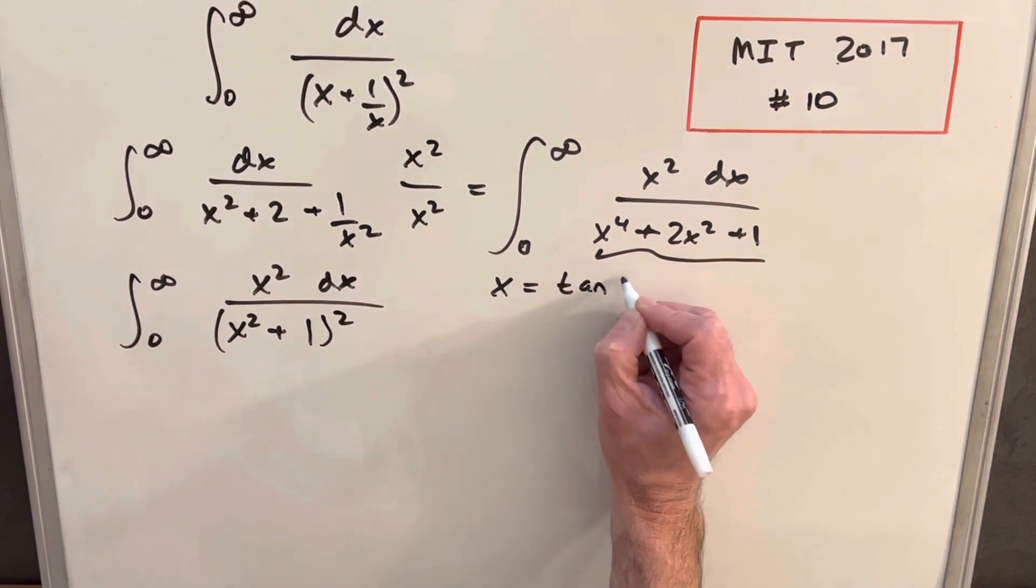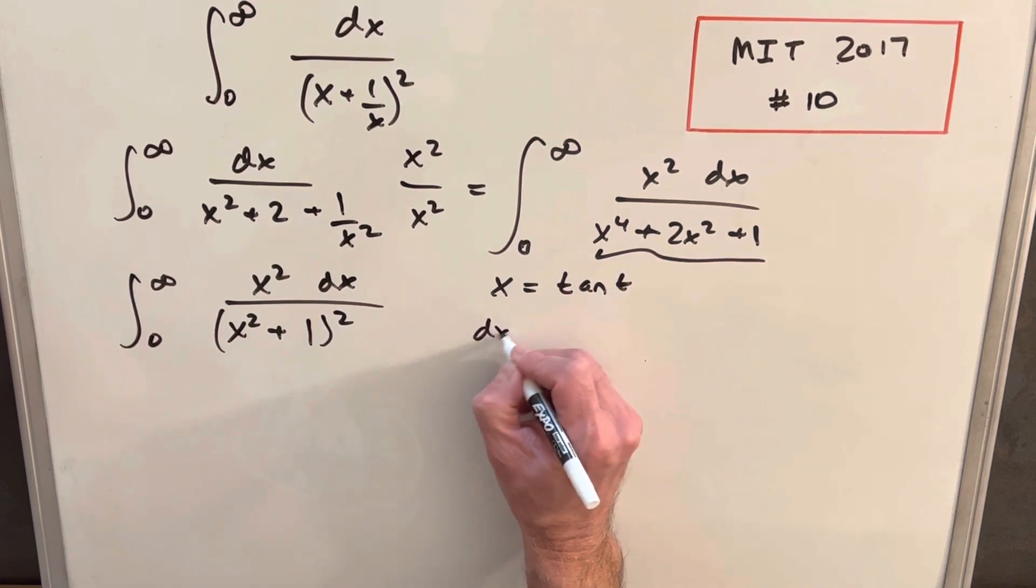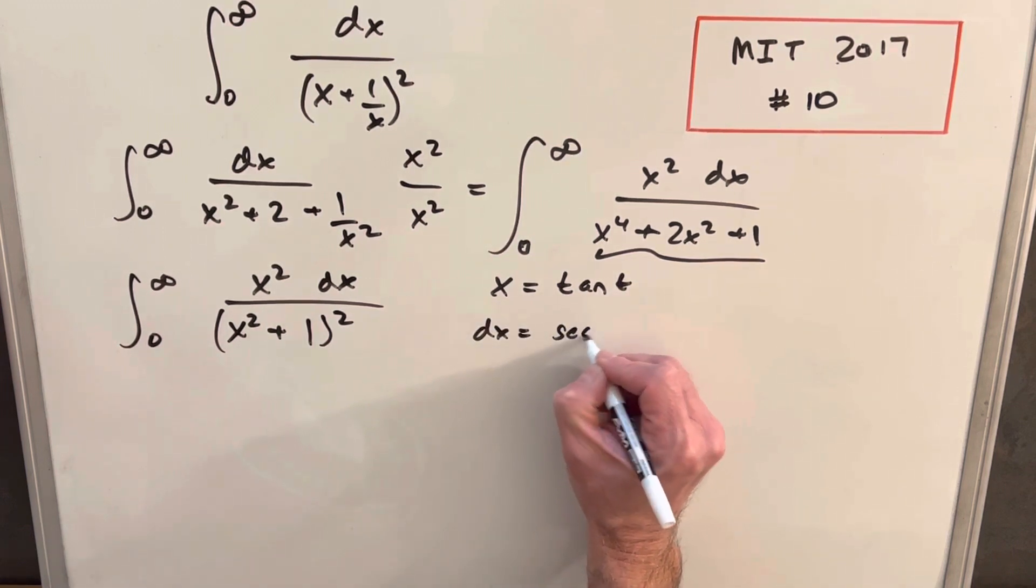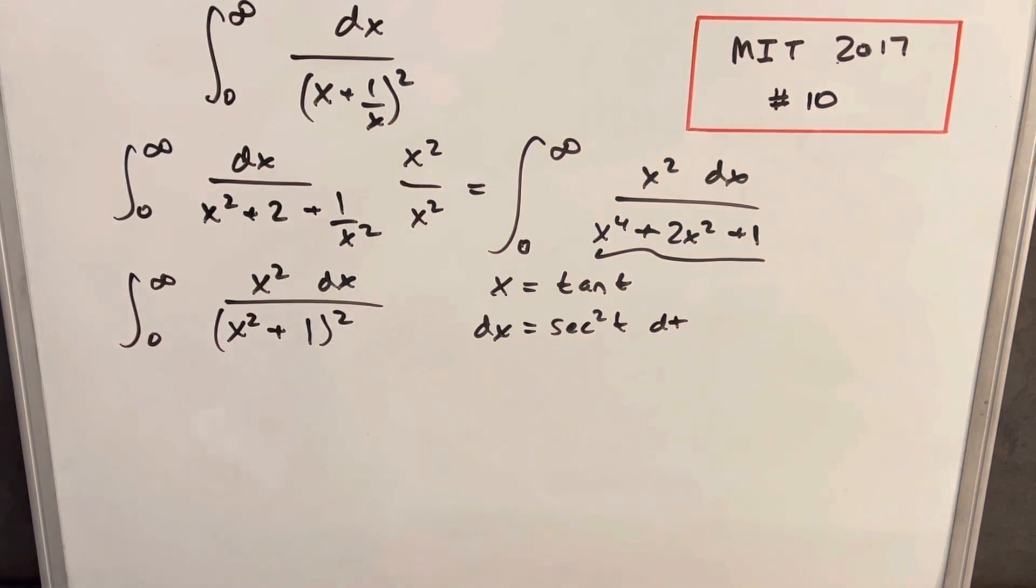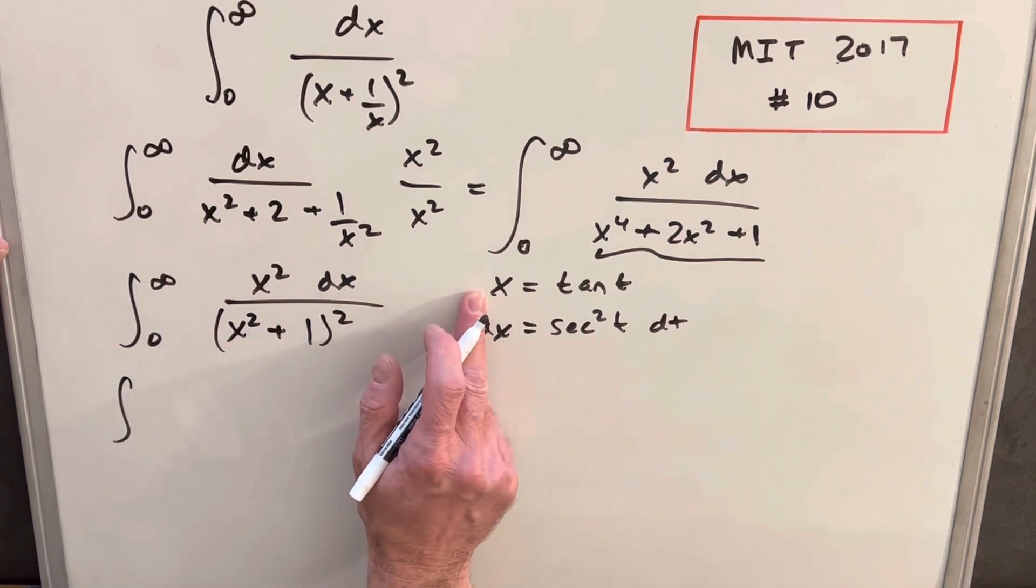So we'll say x is tan t, and then so our dx is going to be secant squared t dt. Now when we make the substitution, first we're going to change our bounds. If we look at when x is infinity, then that means tan is going to be pi over 2.